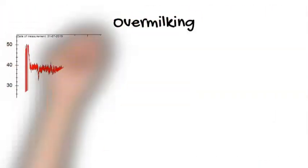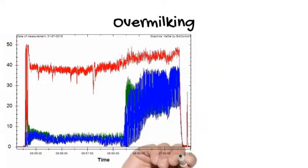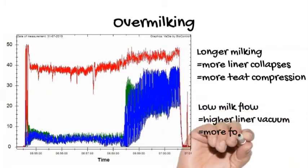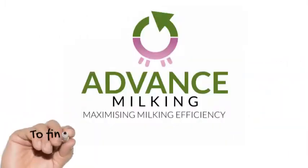Hyperkeratosis risk is also increased by overmilking, a common finding at our dynamic machine tests. It increases the number of compressions the teat's exposed to and may also increase the compressive load.